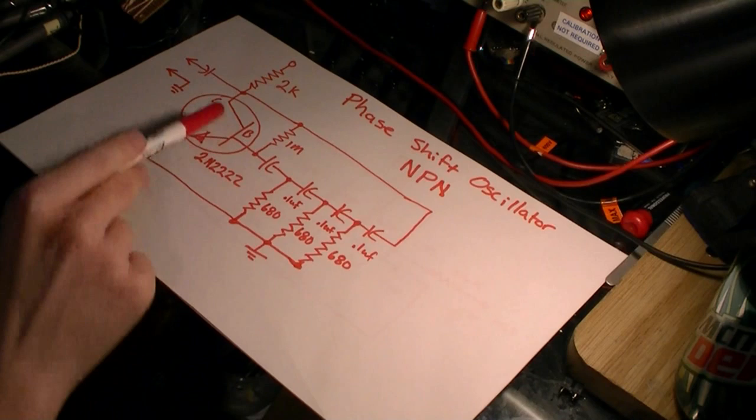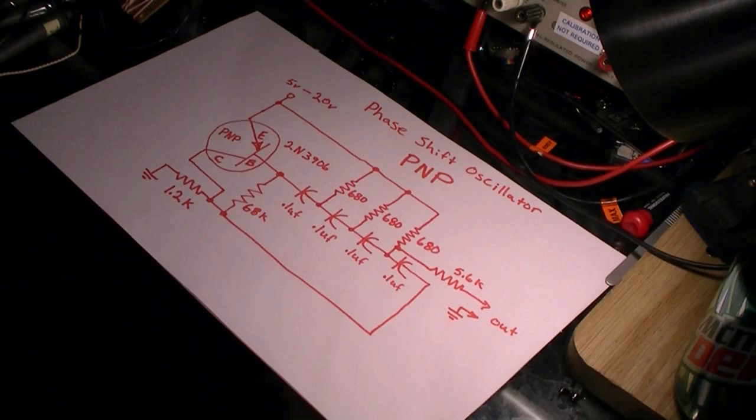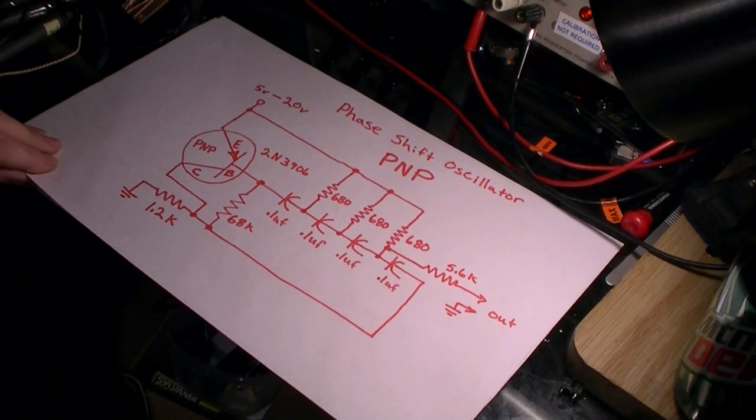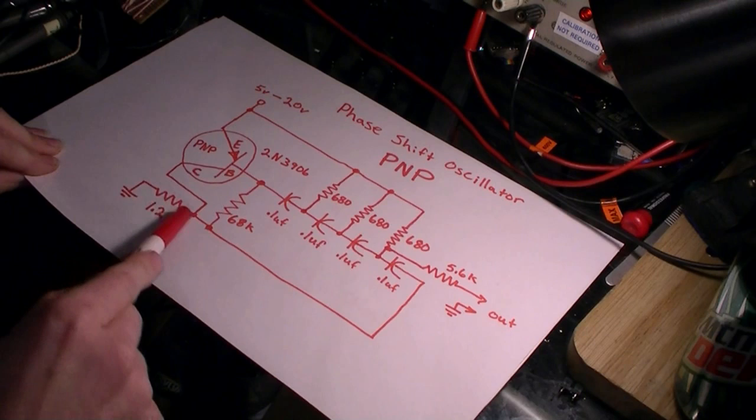Changing the values of the resistors or capacitors in the delay elements or the number of delay elements will change the frequency that the oscillator will oscillate at. A rule of thumb would be, the larger the capacitance and smaller the resistance, the slower the oscillation.